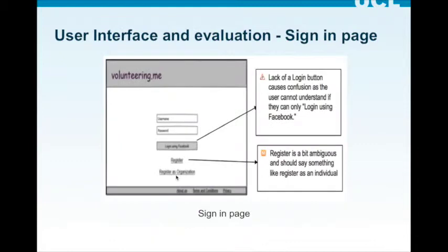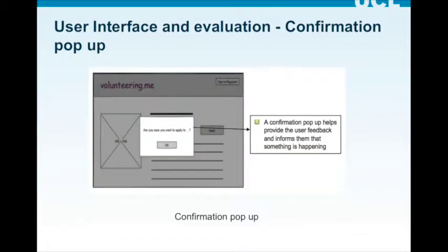Next is the sign-in page. The first problem is that the login button causes confusion — there is a login button that says 'Login with Facebook', where it should just say 'Login' to avoid confusion. The register button below is also a bit ambiguous; it should be more specific, such as 'Register as an Individual'. The confirmation pop-up page provides user feedback and notifies the user if they successfully register for the site and volunteering opportunities.